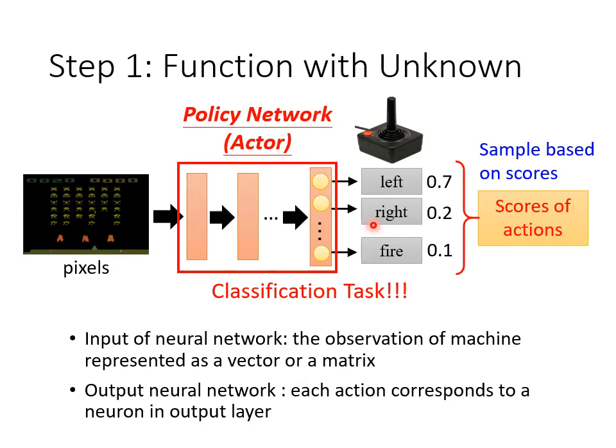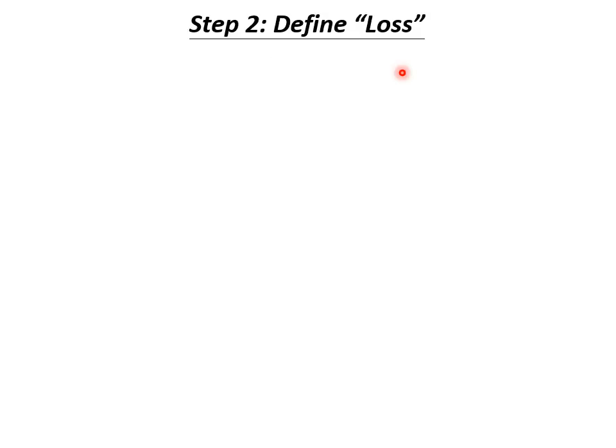So this is the first step — we have a function with unknown variables, a network with parameters that have to be learned. For the next step, we want to define the loss. In RL, what does our loss look like? Let's take a look at the process of our machine interacting with the environment.